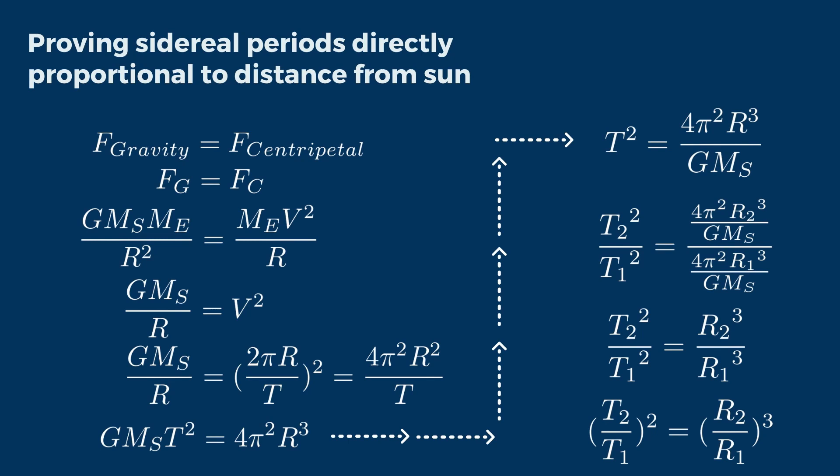This equation is shown on the right-hand side using the same T² equation. Comparing two different planets, we get T₂² divided by T₁² — representing the sidereal periods of two different planets — equals R₂³ divided by R₁³, which is the mean distance of these two different planets from the Sun. We can also prove that the velocity of the planet orbiting is inversely proportional to the distance of the planet from the Sun.